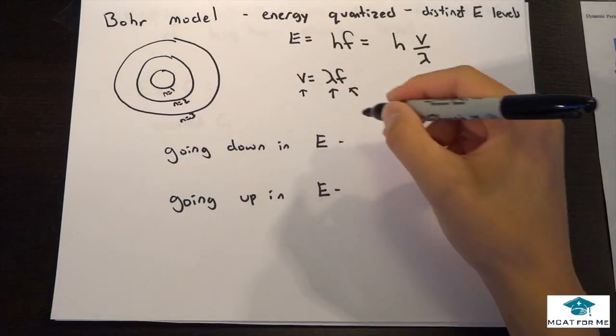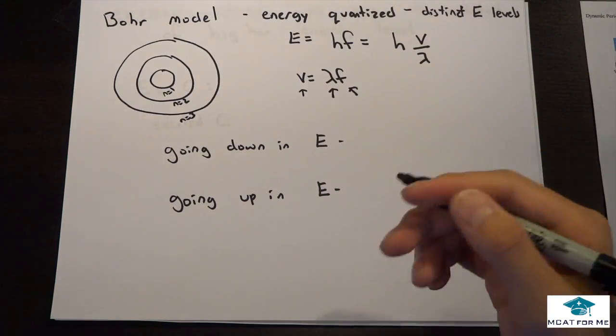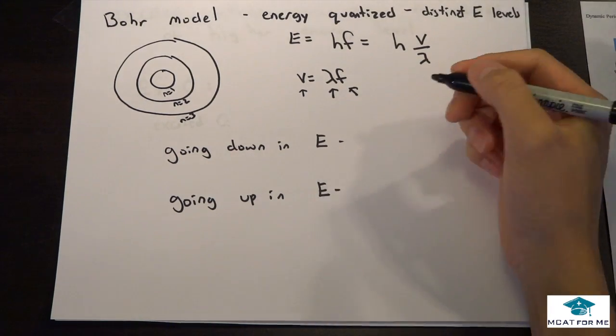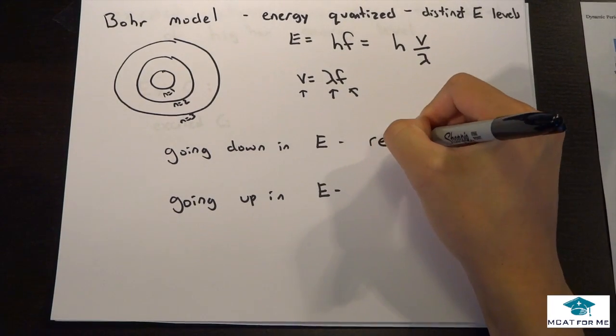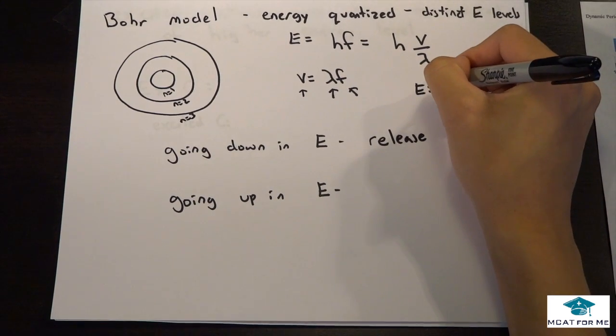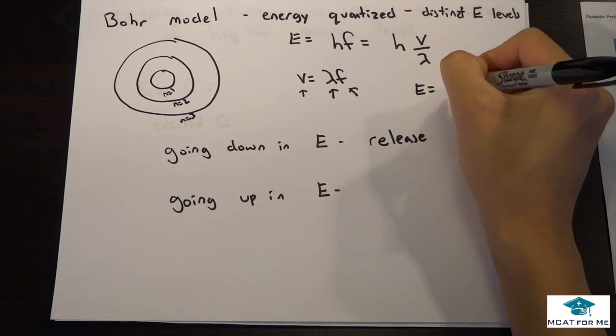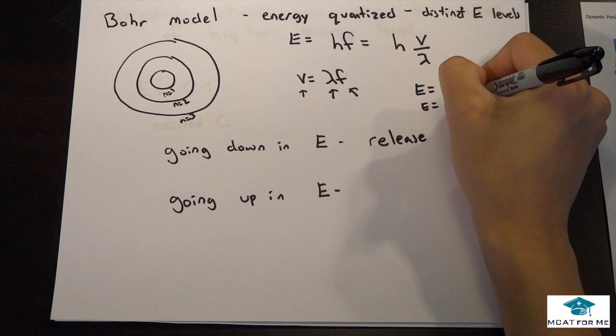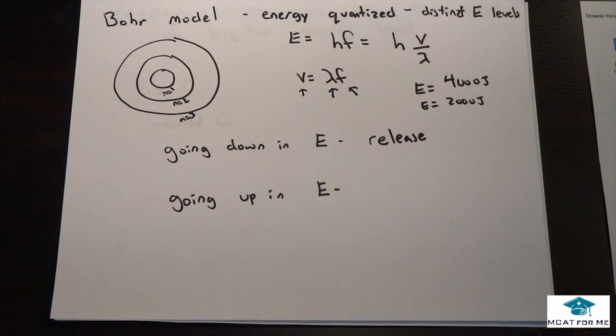That should be pretty intuitive. We release energy. If we had something like energy was at 4,000 joules and we went down to energy equals 2,000 joules, well, where did those 2,000 joules go? You know that energy is always conserved, so it had to be released.